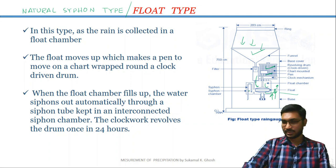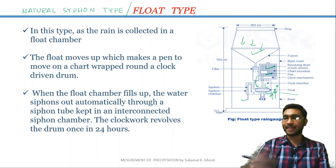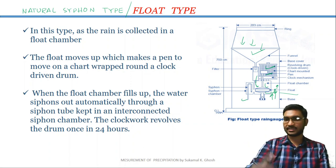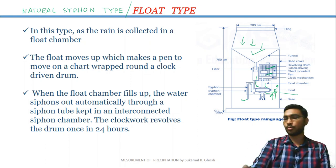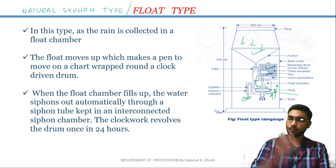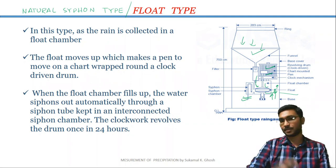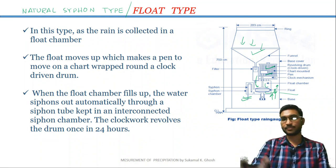You may ask: what is the function or purpose of the siphon? What happens is when the float chamber reaches its maximum capacity — when the float chamber is filled with rainfall water such that there is no space for more rainfall — the siphon tube sucks the extra amount of water and removes it from the float chamber. This is the main function of the natural siphon type recording gauge, also called float type recording gauge.